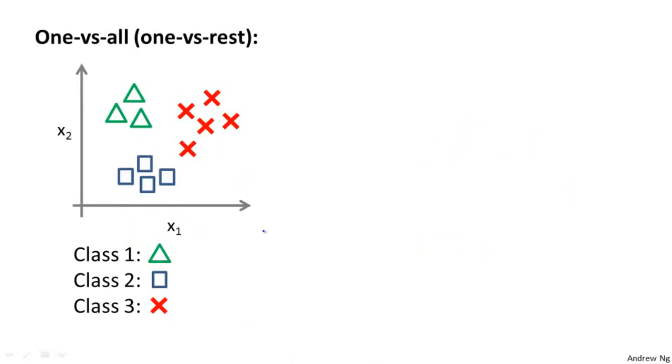Here's how one versus all classification works, and this is also sometimes called one versus rest. Let's say we have a training set like that shown on the left, where we have three classes. So if y equals 1, we denote that with a triangle. If y equals 2, the square. And if y equals 3, then the cross.